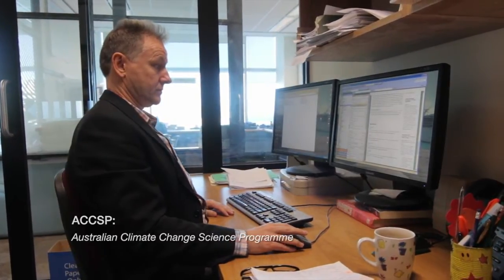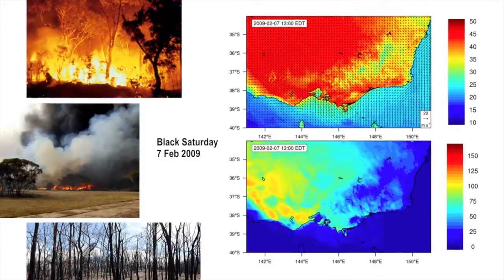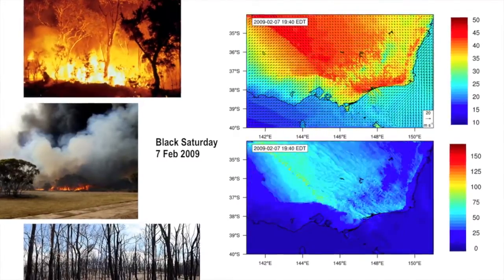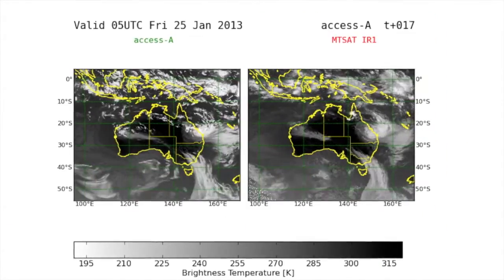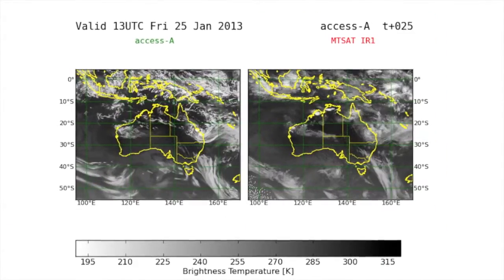A model like ACCESS is a real boon for policy and decision makers in planning for Australia's future. It's being developed by the Bureau of Meteorology, CSIRO, with help from the universities and ACCSP support. We can use that to investigate questions of particular interest to Australia. We have Australian experts in this field here.